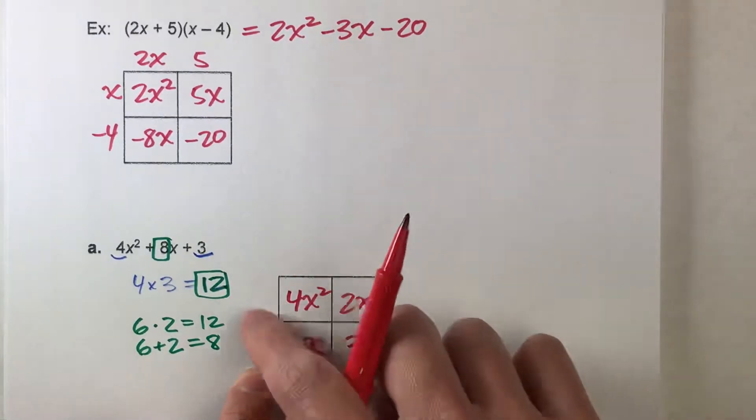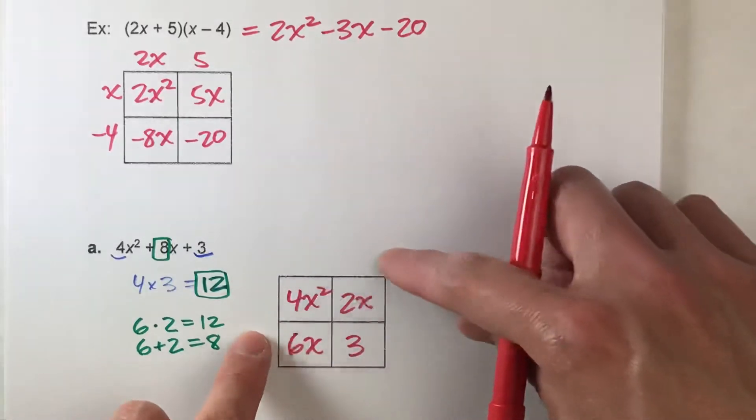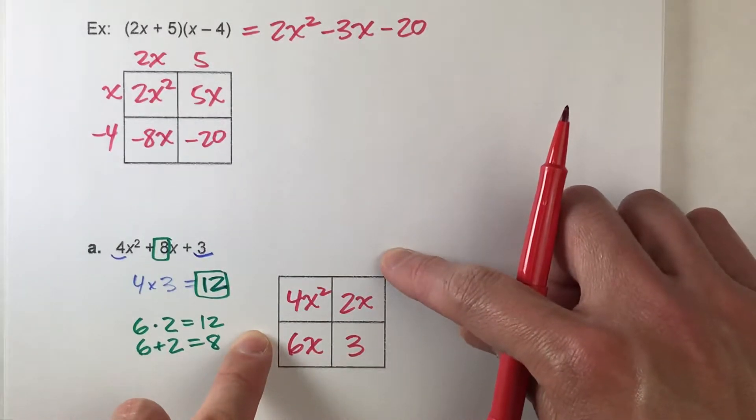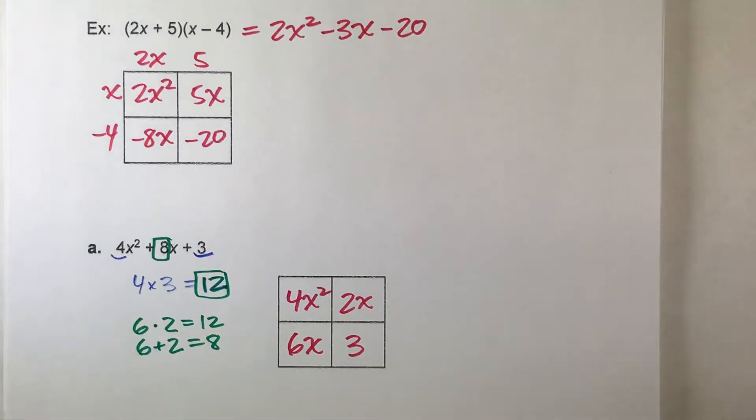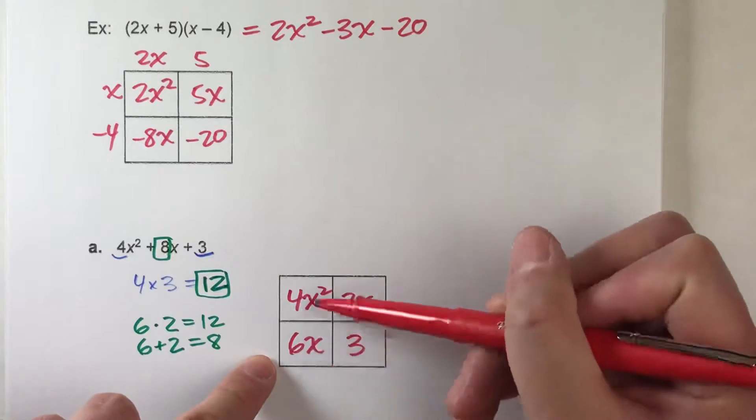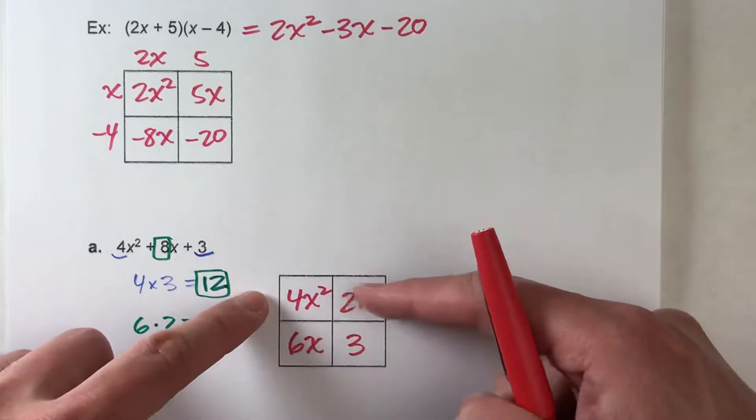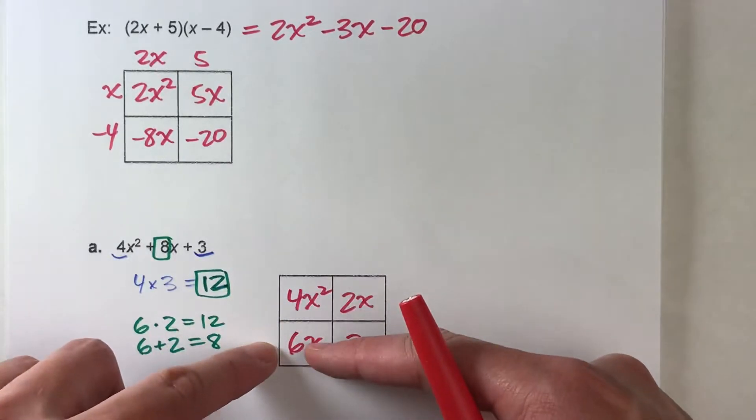Because now that we've filled out this area model, now we just need to figure out what these numbers up here are so I can get our equation in factored form. So, to do that, what we need to do is find the greatest common factor. So let's look in this column here. We've got 4x squared and 6x. What's our greatest common factor? In other words, what's the biggest number that goes into 4 and 6?